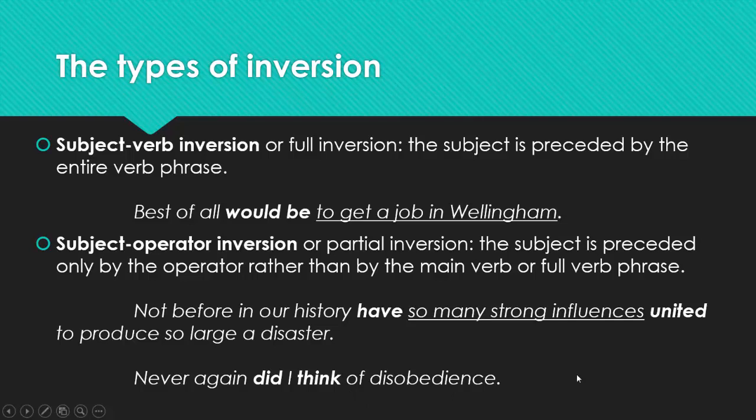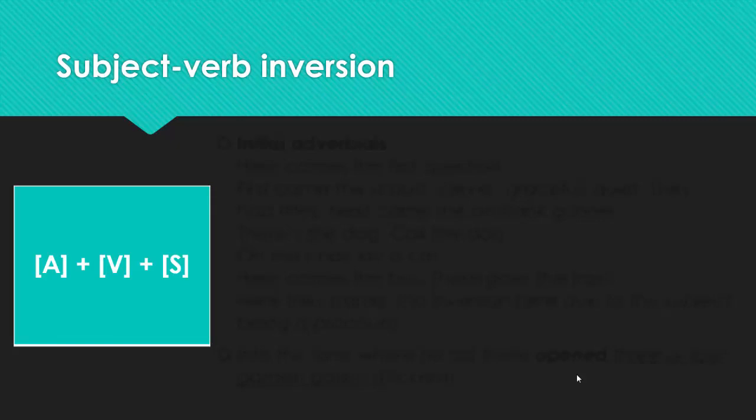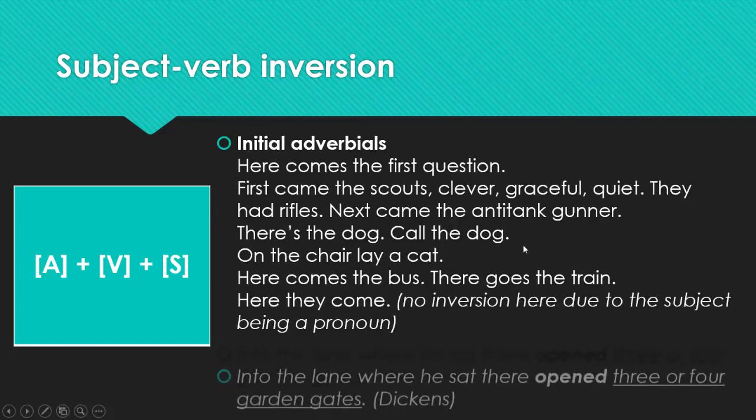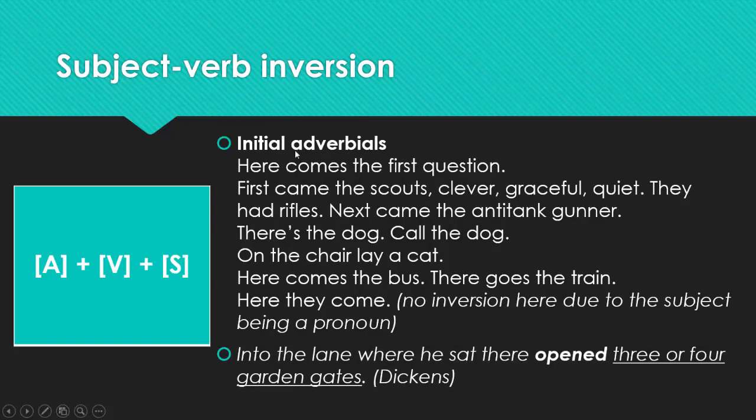In a minute we will see more examples. Subject verb inversion. We have a simple sentence structure here. Adverbial part will be the first in the sentence, verb in the second place and subject the third. Initial adverbials. So, adverbials will be in the first place. For example, here comes the first question. Here is the adverbial part. Here comes the verb. The first question is the subject of a sentence. Here came the scouts, clever, graceful, quiet. They had rifles. Next came the anti-tank gunner. First, next is the adverbial part. Came, came is the verb part. And the subject follows.